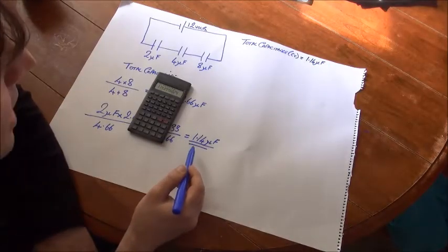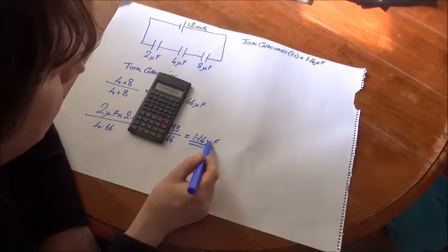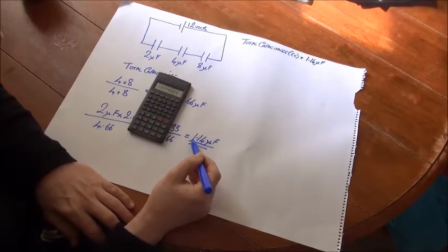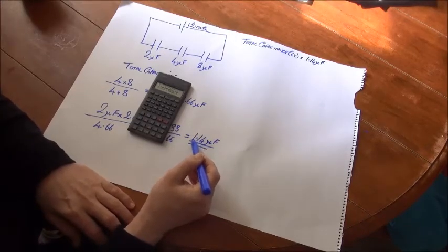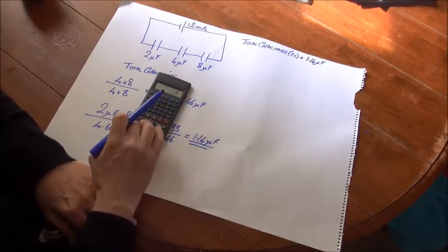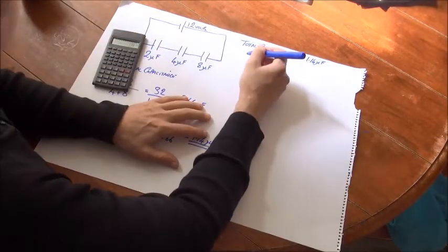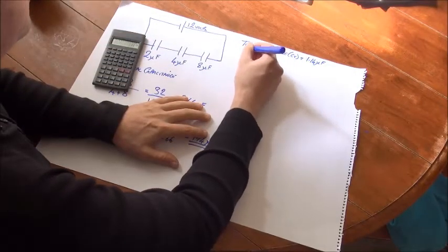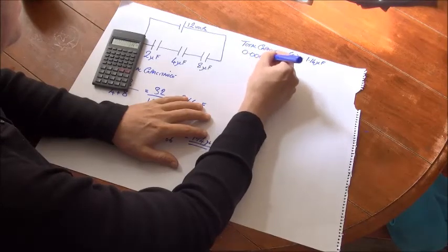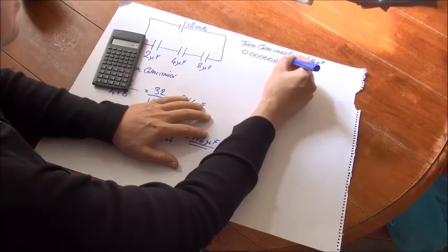One thing we have to be aware of is that micro, denoted by this little U symbol here, stands for one millionth. Therefore, to get the correct number we have to divide 1.14 by a million. And when you divide 1.14 by a million, you get 0.00000114 farads.